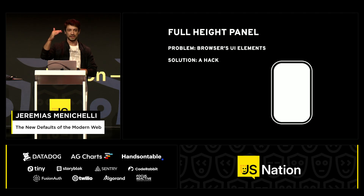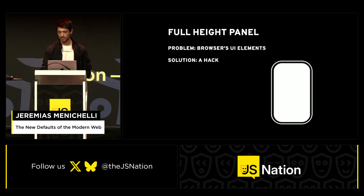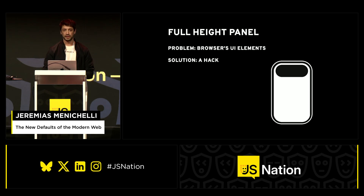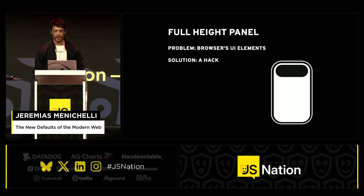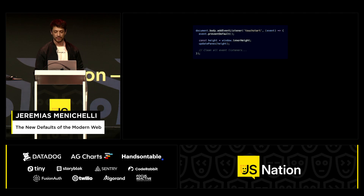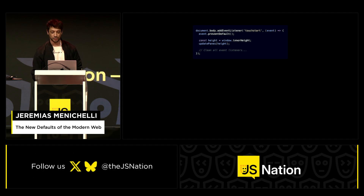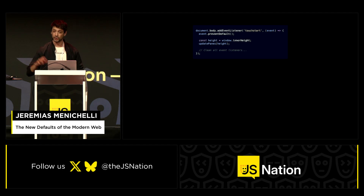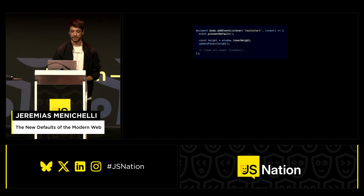First problem: we wanted full-height panels on each section. On desktop, that's super easy. But on mobile the problem was browser UI elements that would get in the way — they'd modify the height of the viewport and sometimes cover important information, like the CTAs to scroll. We found out that our users on mobile would rest their thumb on the screen while waiting, so we created a hack where on touch start we would recalculate the height of all the panes and then remove the event listener.